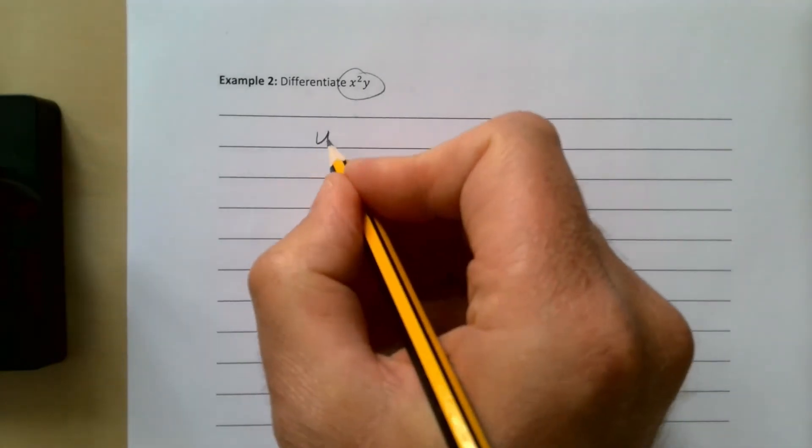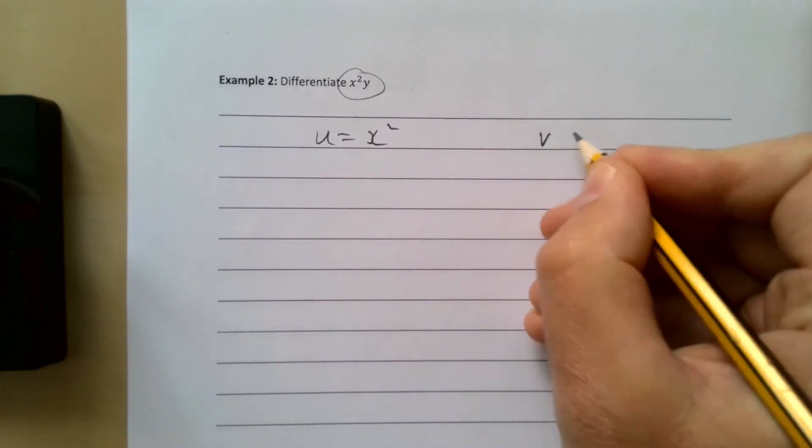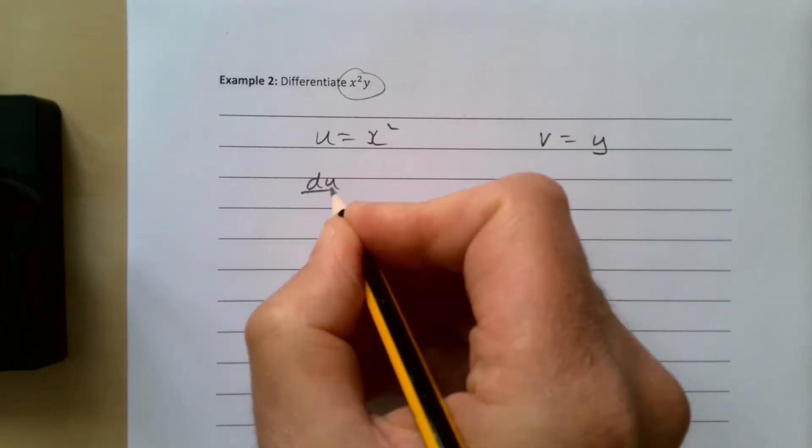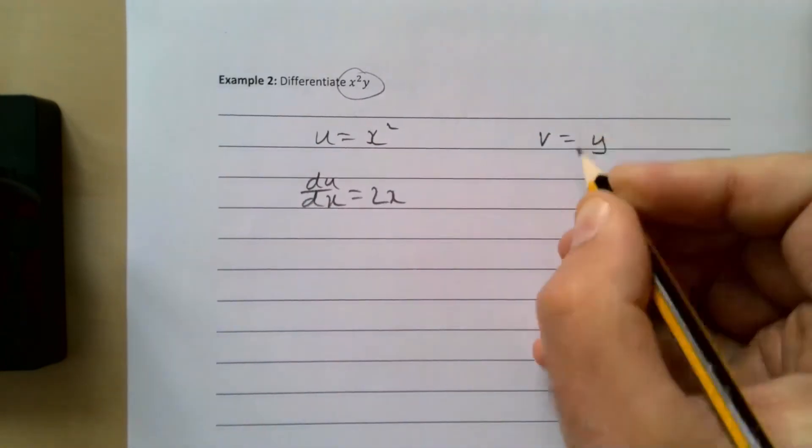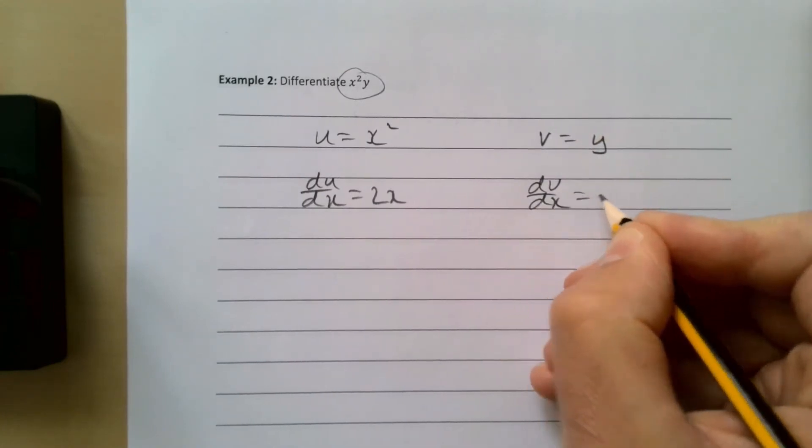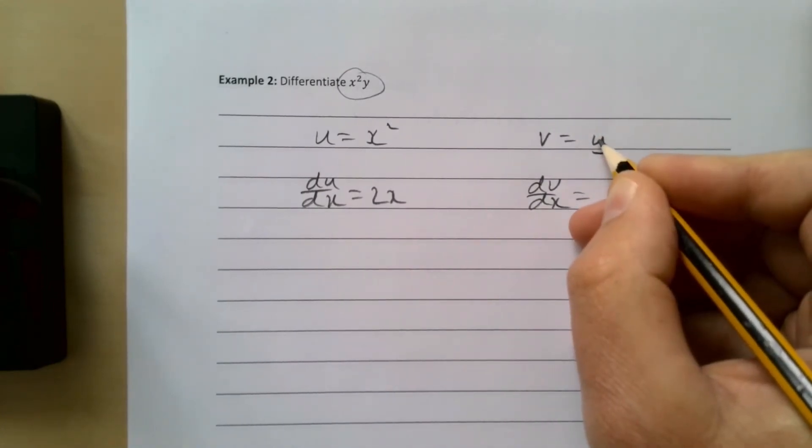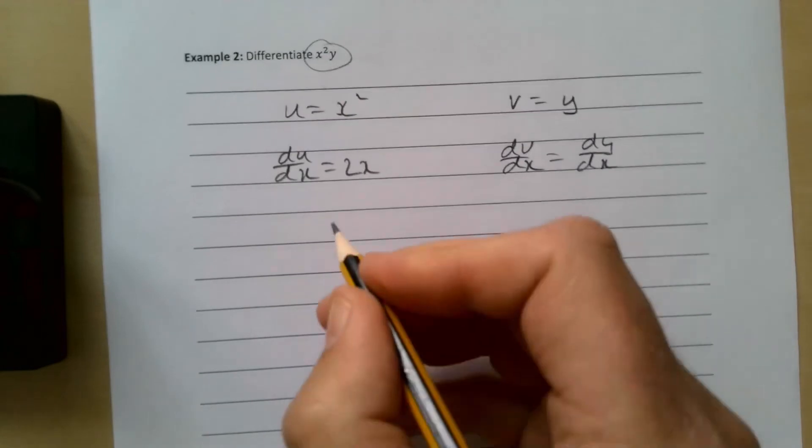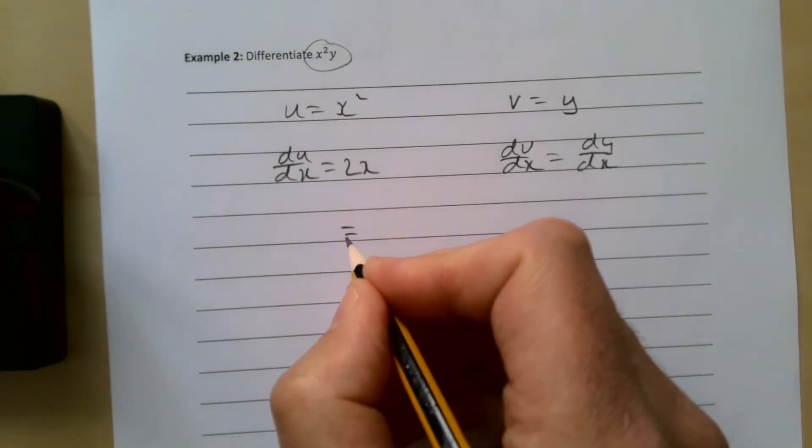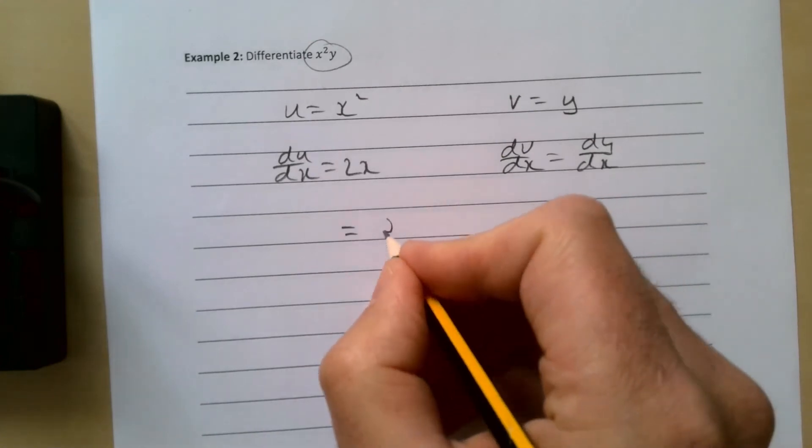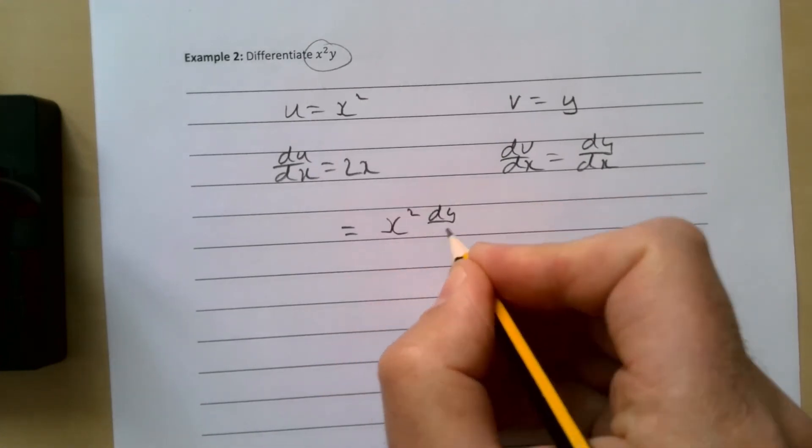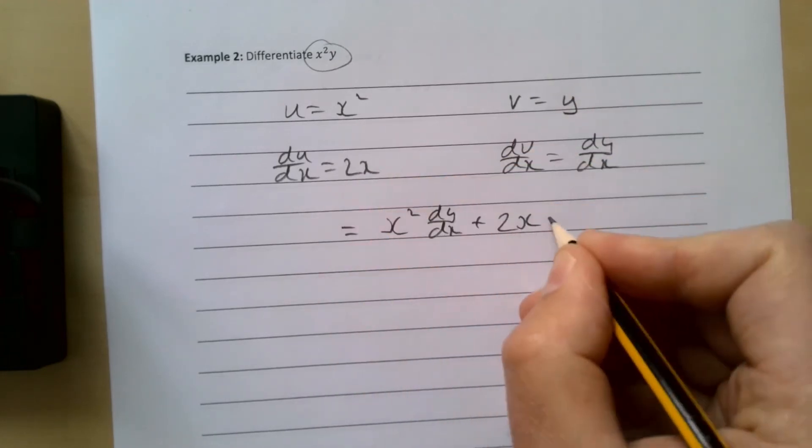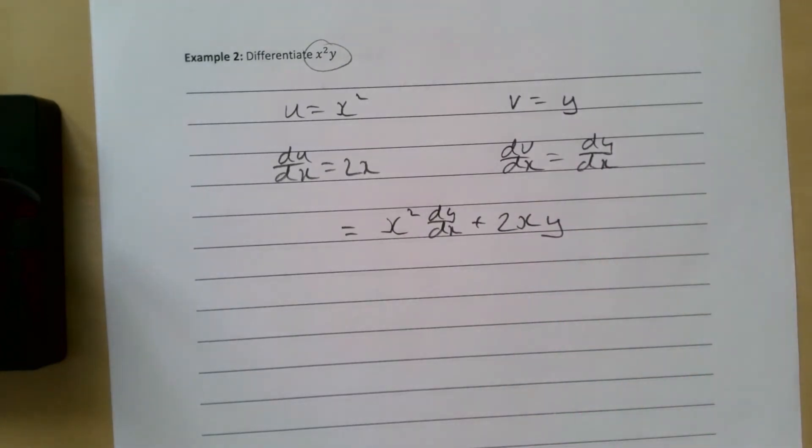We let u = x² and v = y. Differentiating gives us du/dx = 2x. Differentiating v gives dv/dx = dy/dx. The product rule then says u dv/dx plus v du/dx, so it's x² dy/dx plus 2xy.